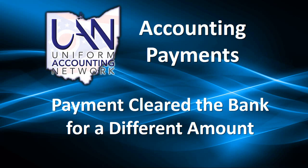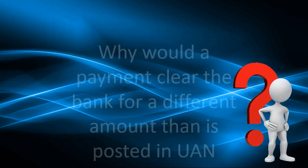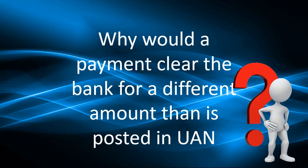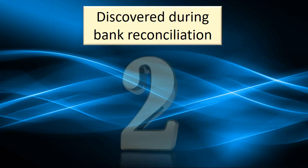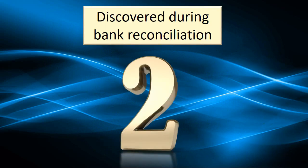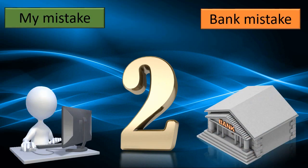This is a short video showing what to do when your accounting payment clears the bank for a different amount. Why would a payment clear the bank for a different amount than it is posted in UAN? Well, it's usually discovered during a bank reconciliation, and it's one of two problems: either my mistake or the bank's mistake, and I have to investigate to see what happened.